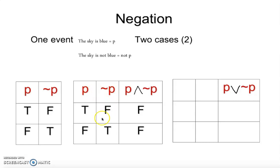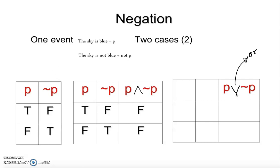Remember, we have only one letter here, so that's why there are only two cases. Some students think there are two letters, but no — it's only one letter with its negation, so you should have only two rows. The letter could be P, Q, R, W — any letter works. Now this time we have OR, or disjunction. In set notation we say union, but here we say OR or disjunction.